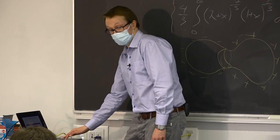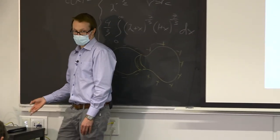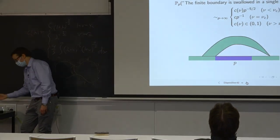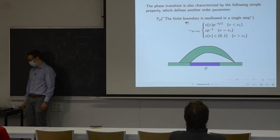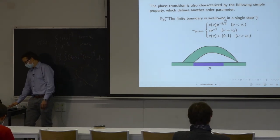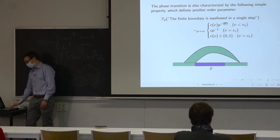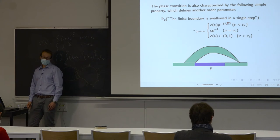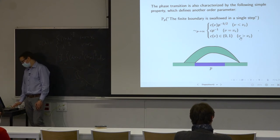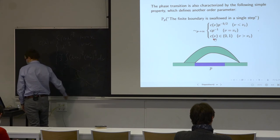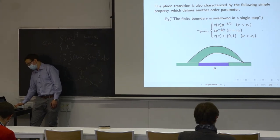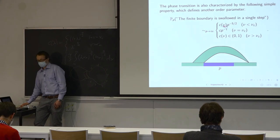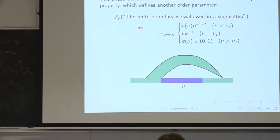We found a nice order parameter. There's another natural one: the probability that a finite boundary is swallowed in a single peeling step. At high temperature it has exponent -5/2; at low temperature it has a finite value due to the bottleneck; and at the critical temperature it has exponent -1. This exponent -1 is crucial when studying scaling limits of the interface length.